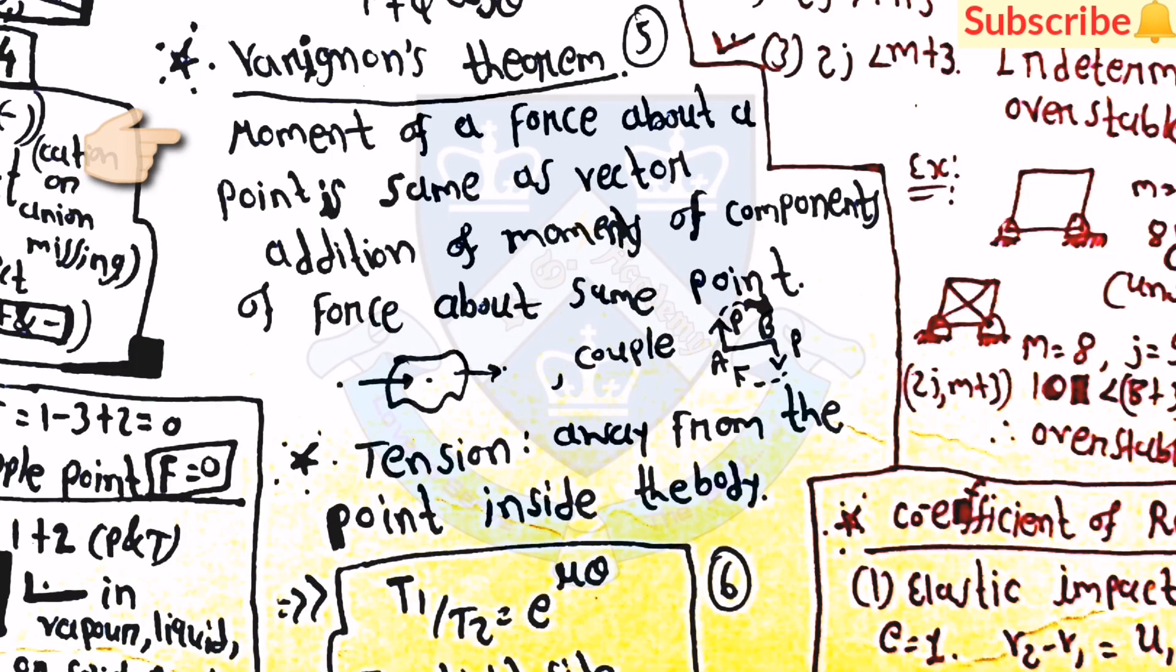Then after, the Varignon theorem. It states that the moment of a force about a point is same as the vector addition of the moments of components of force about the same point. Then, the tension is always away from the point inside the body.